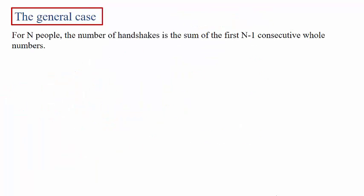Let's look at the general case. Let's suppose we have n people where n represents, let's say, 10, 15, 30, however many people will be shaking hands. Did you notice that the sum of the numbers up to one less than the number of people gave us the answer that we required? In other words, we can say that if we have n people, then the number of handshakes required is going to be the sum of the first n minus one consecutive whole numbers.